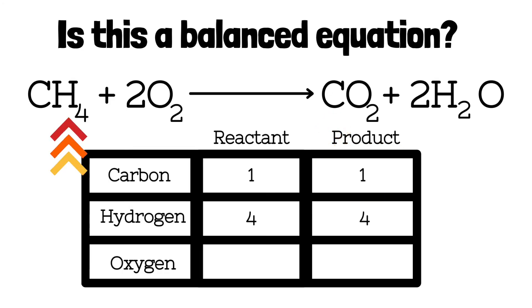Then I can see that there are 4 hydrogen on the reactant side and 4 hydrogen on the product side and I can record them in my chart.